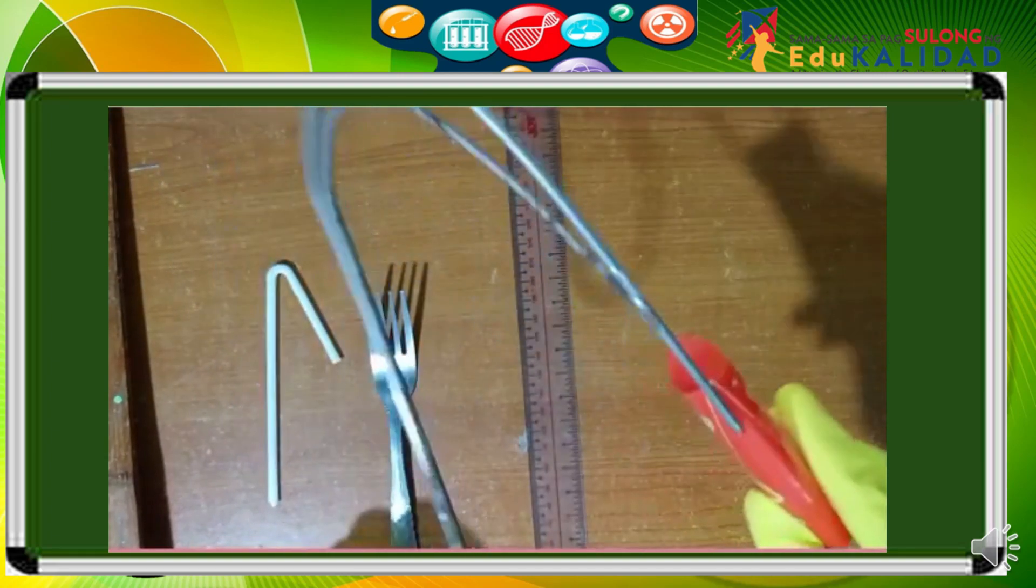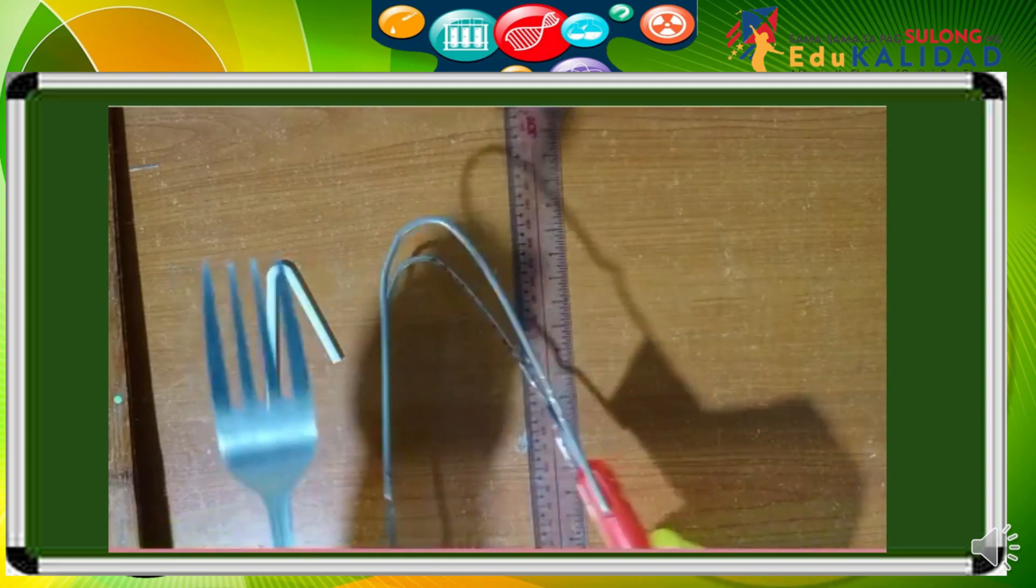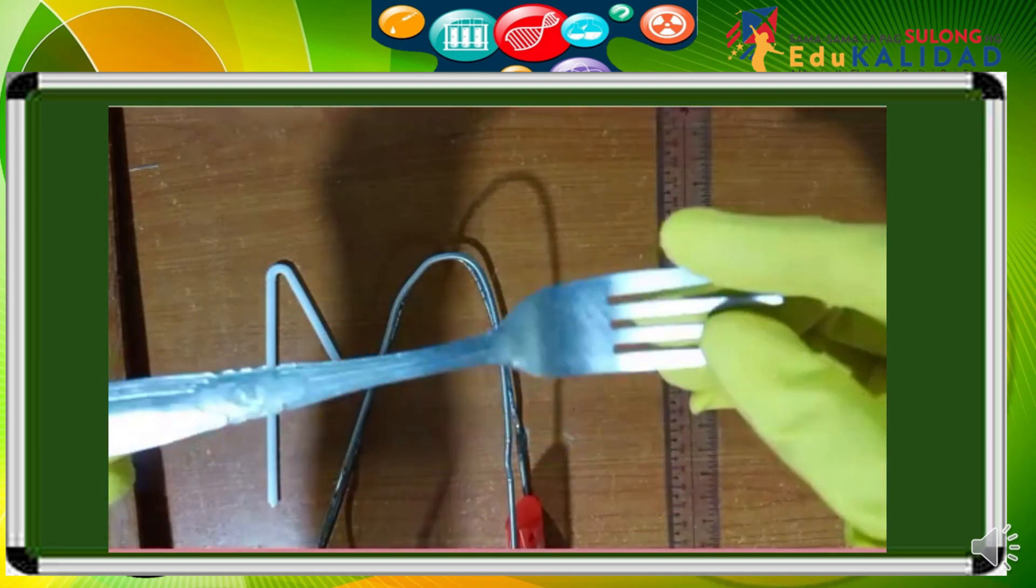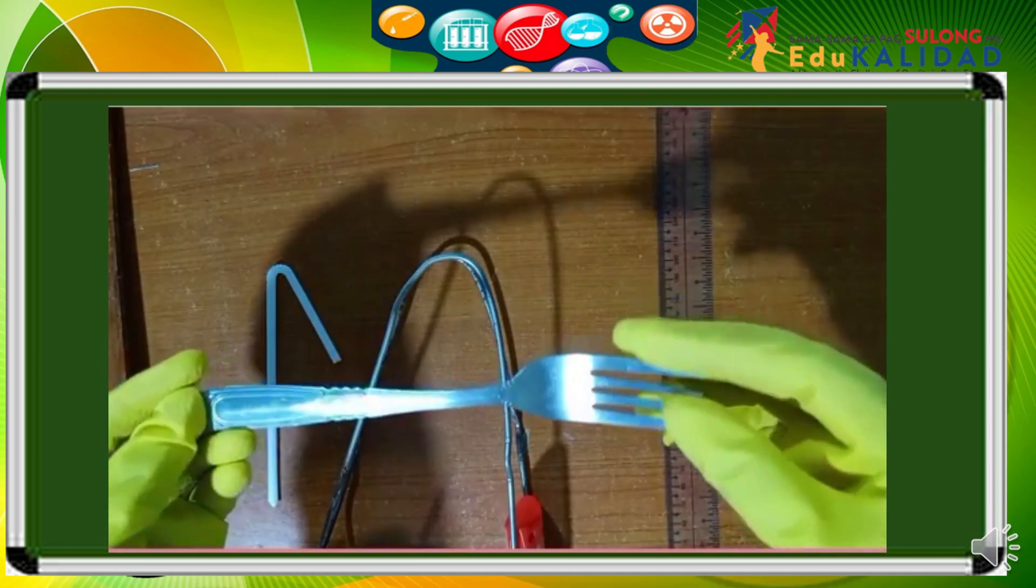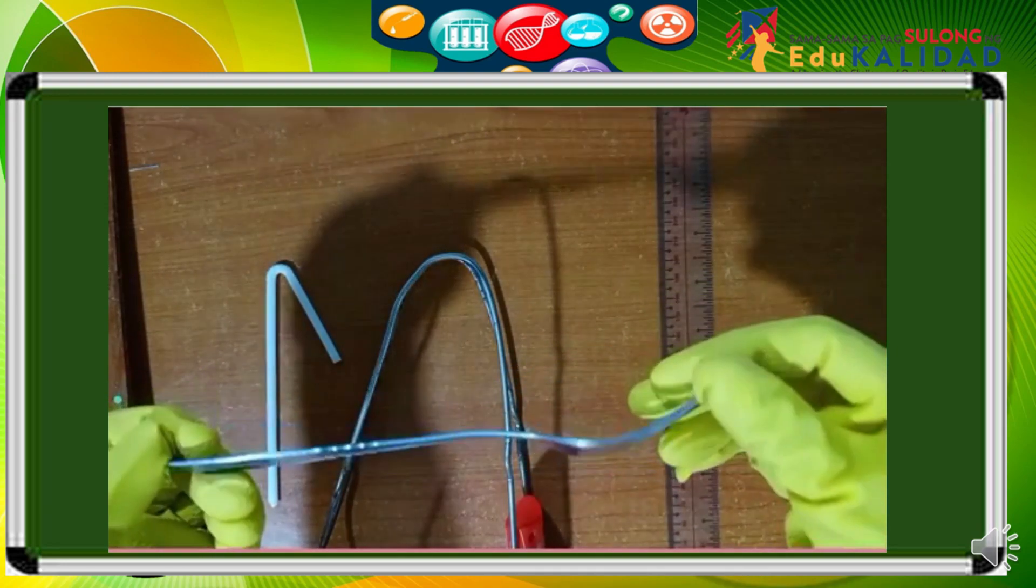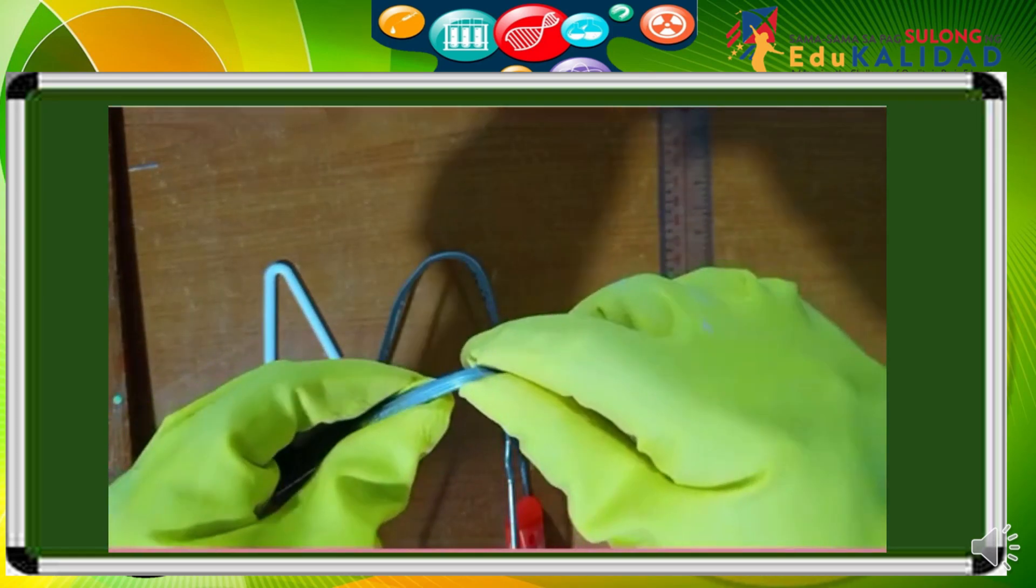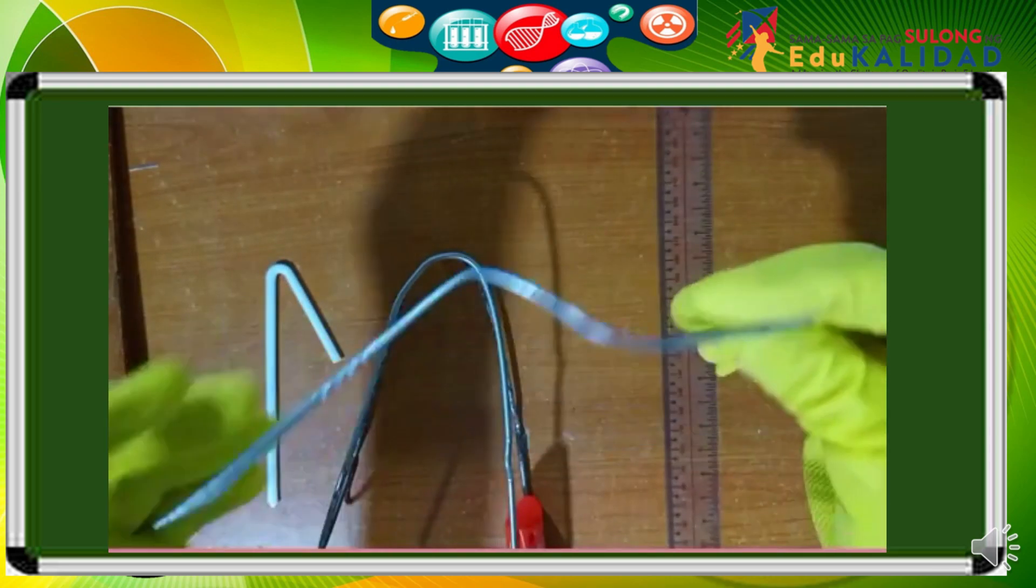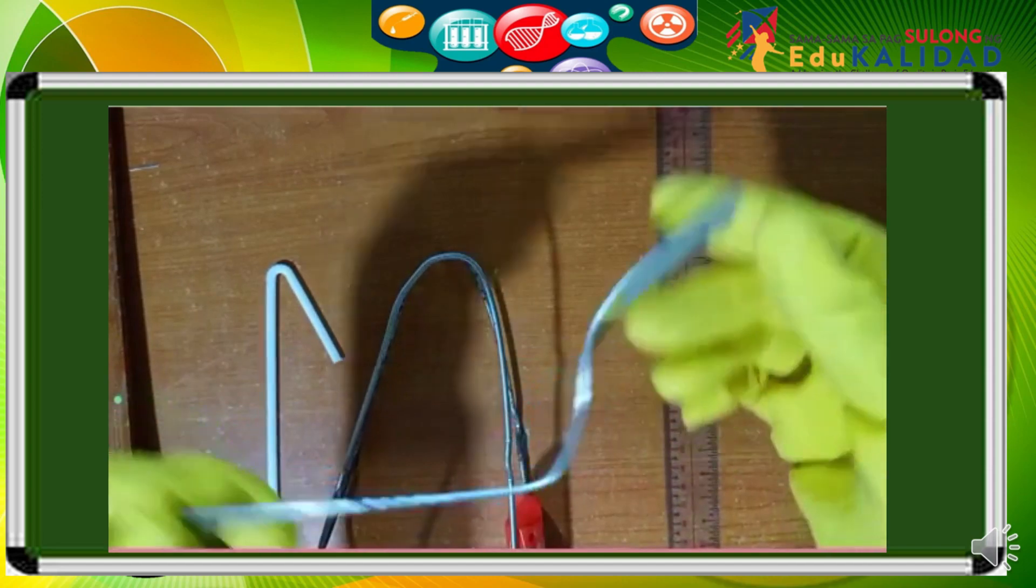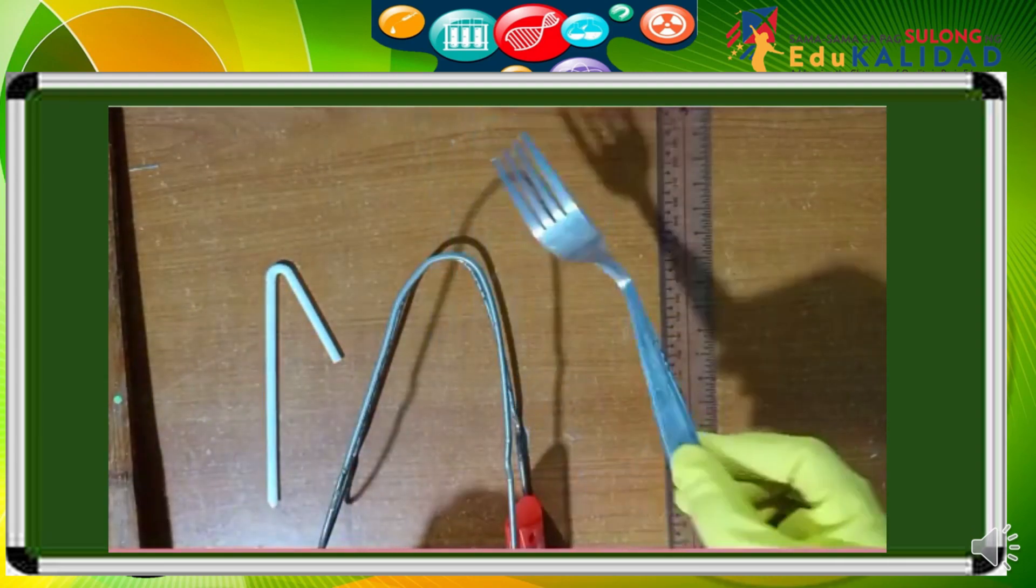Next is this fork, metal fork. You should not bend plastic fork because it may be broken, but this metal fork can be bent. When we bend, the size, the shape, the physical appearance change, but no new material is formed.